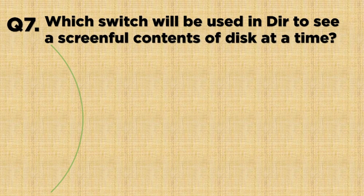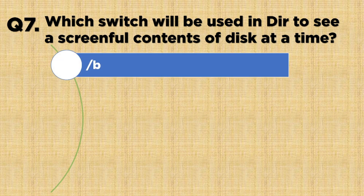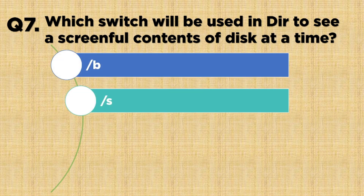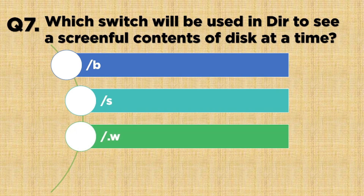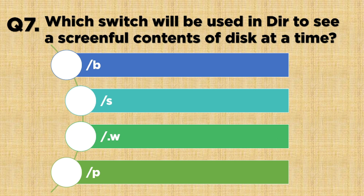Question number 7: Which switch will be used in DIR to see a screenful of content at a time? Option A: /B, Option B: /S, Option C: /..2, Option D: /P. The correct answer is Option D, /P.